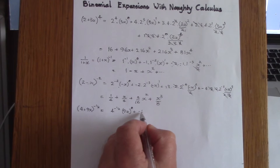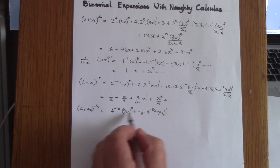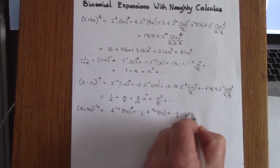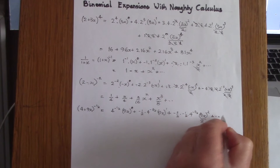We differentiate to get plus minus one half times 4 to the power of minus 3 over 2, and integrate the second term to get 9x to the power of 1. For the next term, differentiating gives minus 3 over 2 times minus 1 over 2 times 4 to the power of minus 5 over 2.